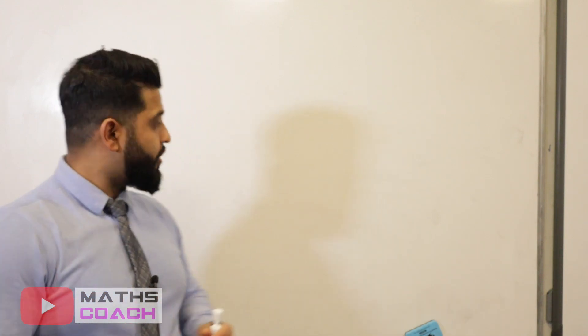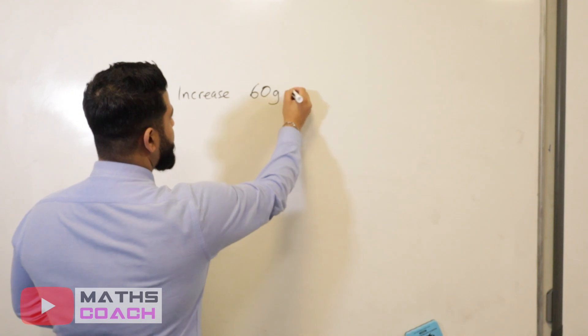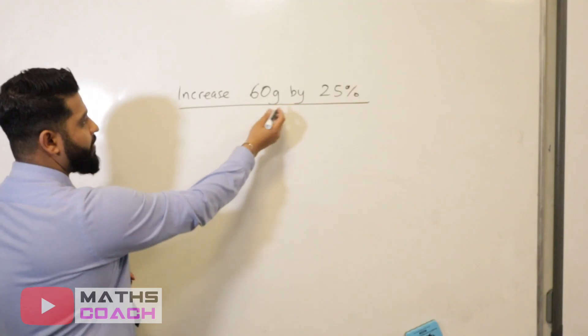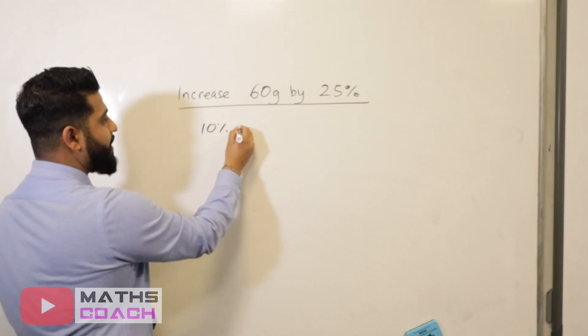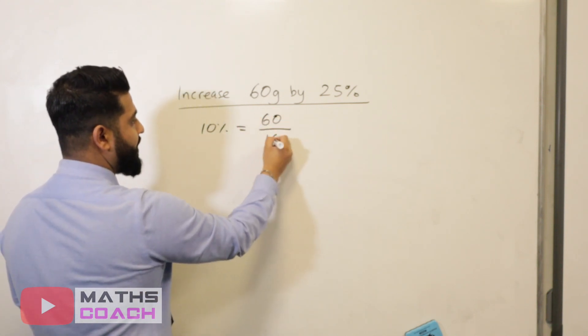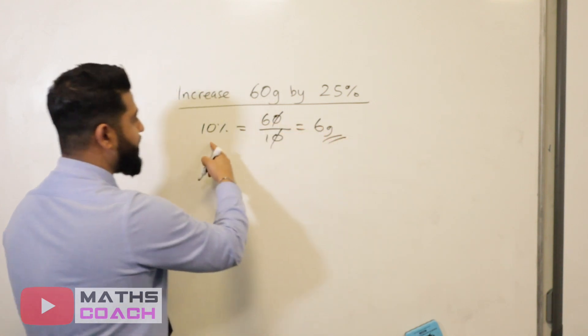In our final question, we will increase 60 grams by 25%. First thing we're going to do is calculate what 10% is. We will calculate that by doing 60 divided by 10. That gives us 6 grams. So 10% is 6 grams.